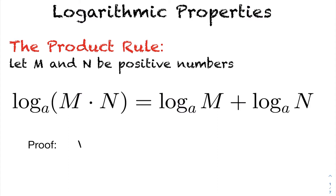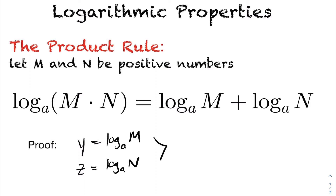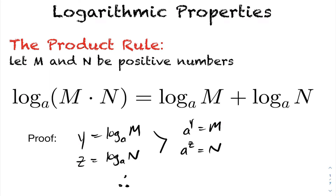To see this proof, let y equal log base a of m and let z equal log base a of n. Writing each in exponential form, we have a to the power of y equals m and a to the power of z equals n. Therefore, the product m times n must equal a to the y times a to the z. When you multiply with the same base, you add the exponents, so m times n equals a to the power of y plus z.